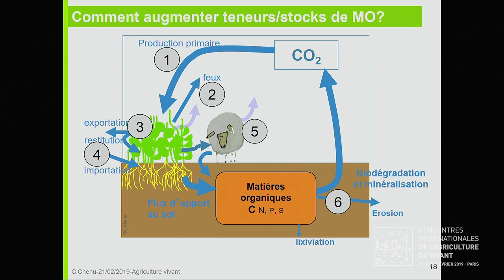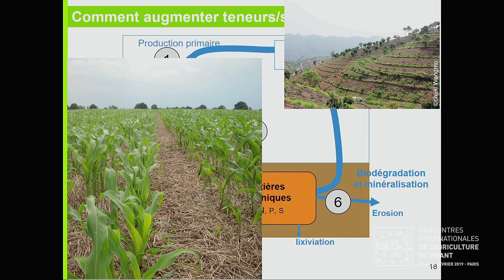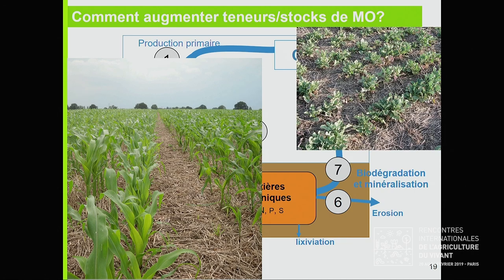Tout ça détermine finalement les flux d'apport au sol — on contrôle les flux d'apport au sol. Maintenant, il y a les flux de sortie : on peut essayer de lutter contre l'érosion par des aménagements appropriés et par une couverture permanente du sol, comme en agriculture de conservation, qui va protéger la surface du sol de l'action de la pluie. Notre flèche la plus importante, c'est biodégradation et minéralisation. Qu'est-ce qu'on peut faire ? Essayer de limiter les perturbations physiques du sol, réduire le labour, se tourner vers des systèmes en non-labour, en semi-direct, ou en véritable agriculture de conservation, mais également une couverture du sol permanente.